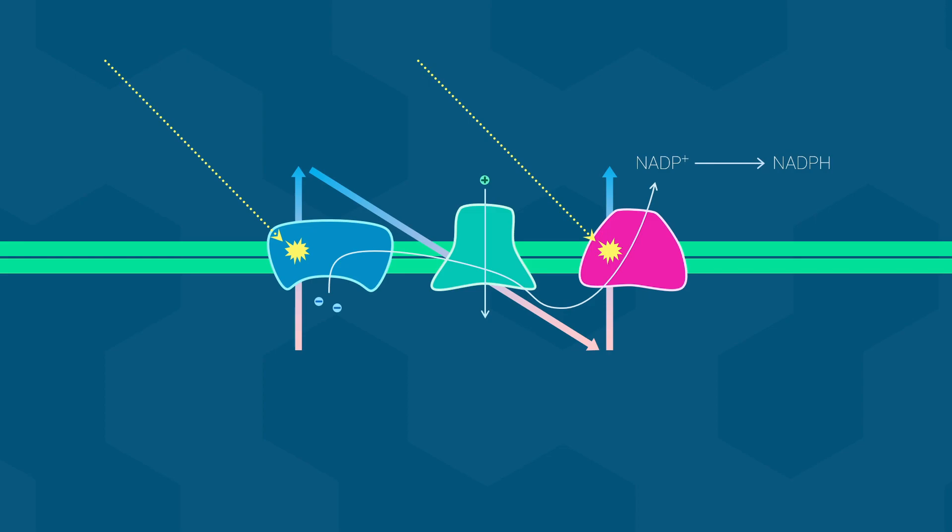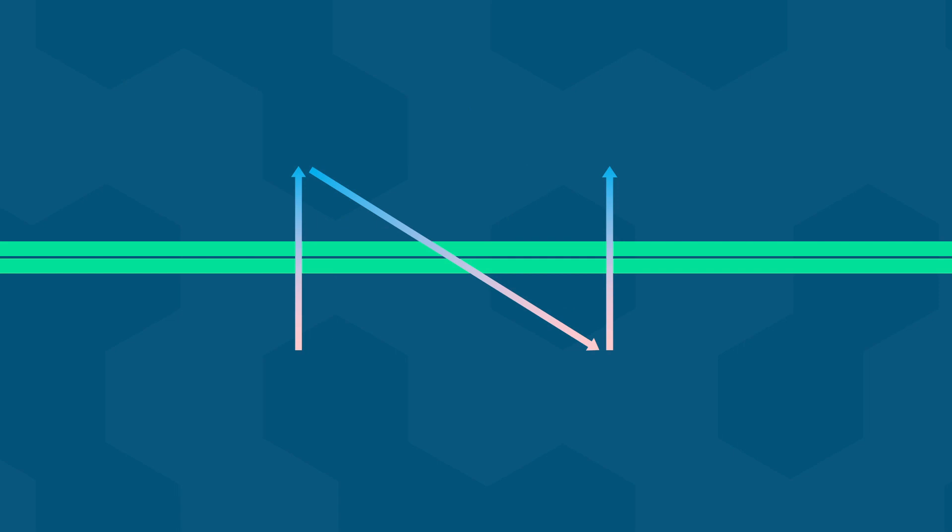By the way, this final redox reaction is carried out by another enzyme that I decided not to show just to keep it simple. I should just mention that because the shape of the electron potential energy change clearly looks like the letter N, we call this the Z scheme. Presumably whoever discovered the Z scheme did so while laying on their side, or perhaps Z scheme just sounded better.